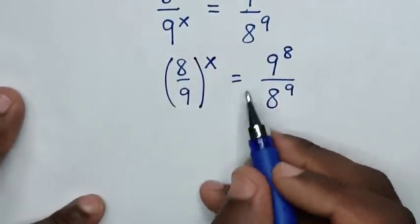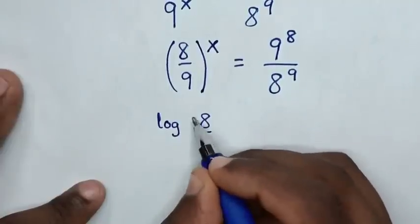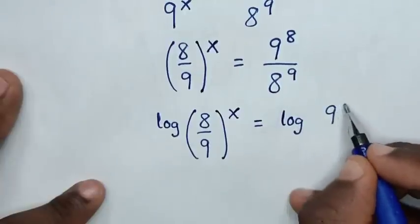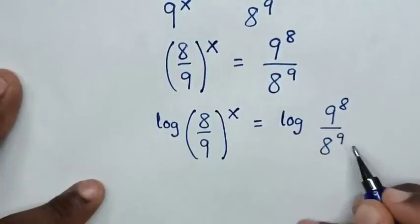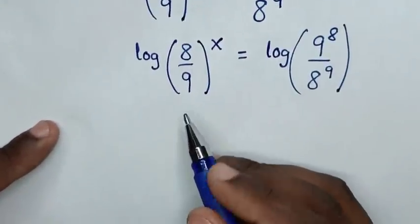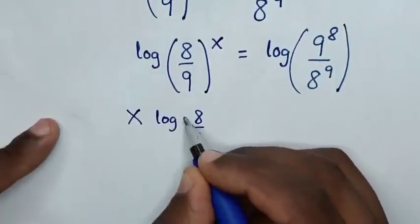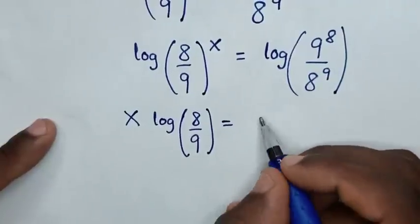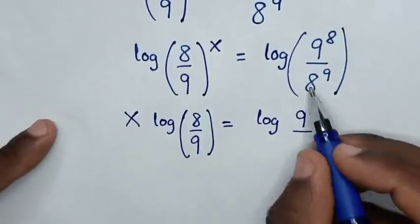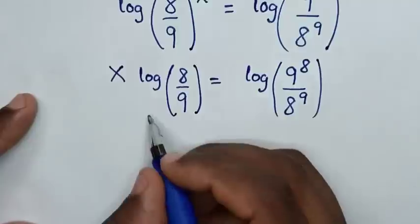Then, taking log of both sides and applying the power rule, it will be x times log of (8 over 9) is equal to log of (9 power of 8 over 8 power of 9).